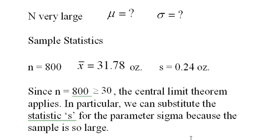Since n equals 800, which is going to be small compared to the total number of possible cereal boxes, but it's greater than or equal to 30, the central limit theorem applies. In particular, we can substitute the statistic S for the parameter σ because the sample is so large.